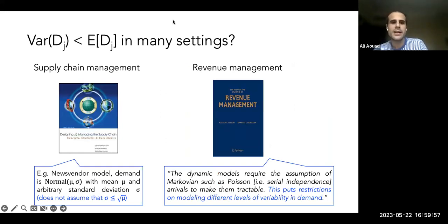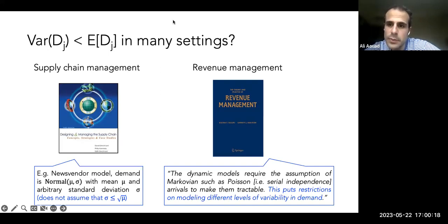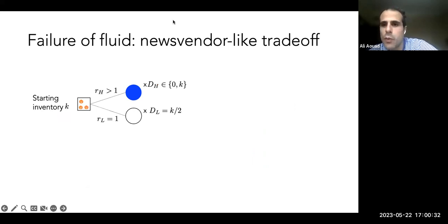There is a disconnect between the types of models people solve — like the news vendor with a single period — and the types of models used for online decision-making with real-time updated decisions, which are subject to the serial independence constraint. Let me give a toy example of why this matters from a decision-making perspective — why we need to think beyond the fluid relaxation.